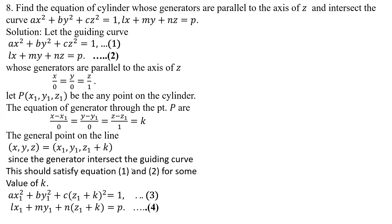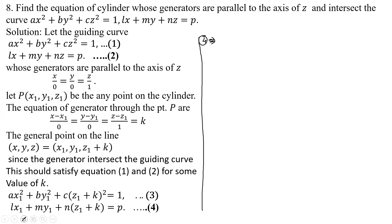From equation 4, we find out the value of z₁ + k and substitute it into equation 3 to get the required equation of the cylinder. Equation 4 can be rewritten by putting the first two terms on the right-hand side and dividing by n. So the value of z₁ + k = (p − Lx₁ − my₁) / n.